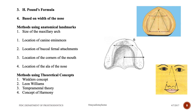Methods using theoretical concepts include four: Winkler's concept, Leon Williams' concept, the temperamental concept, and the concept of harmony — which is not used today. These concepts were used historically to determine the width of the anterior teeth.